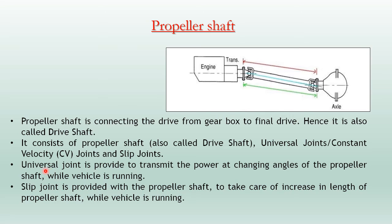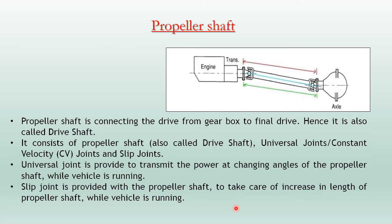Slip joints are provided with the propeller shaft to take care of increase in the length of the propeller shaft. When the axle shifts downward, the length of the propeller shaft increases, and the slip joint accommodates this change in length.